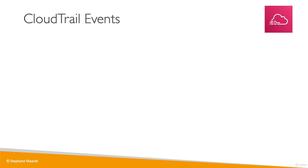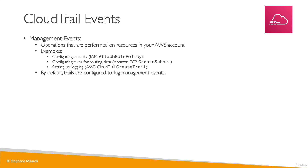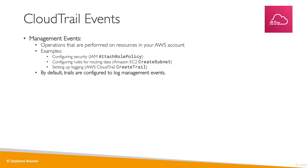There are three kinds of events in CloudTrail. The first is management events, which represent operations performed on resources in your AWS account. For example, configuring security uses the API call IAM AttachRolePolicy; creating a subnet or setting up logging will also appear. By default, trails are configured to log management events.